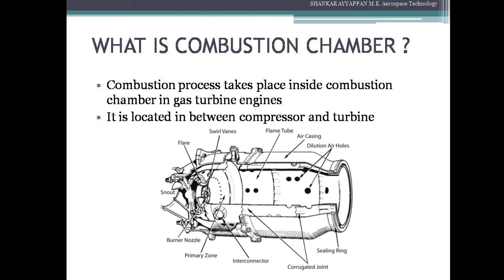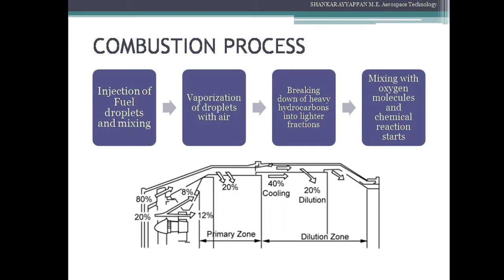We also have a sealed ring to seal the combustion chamber inside the gas turbine engine. Next we will discuss about the combustion process. The combustion process consists of the following four steps. The first step is injection of fuel droplets and then mixing those fuel droplets with the air. In the first step, the fuel enters into the snout where the fuel droplets are injected by fine spray atomizers or injectors, and then it mixes with the compressed air coming from the compressor.